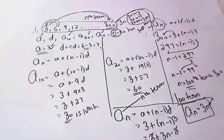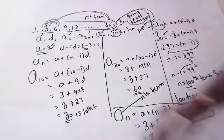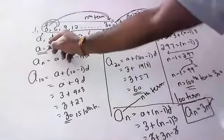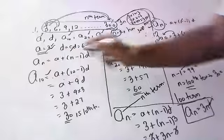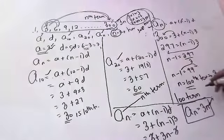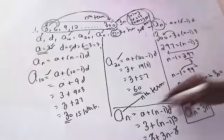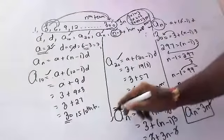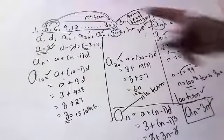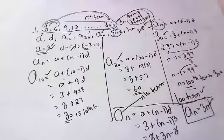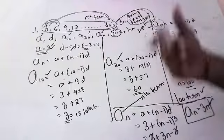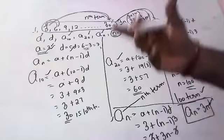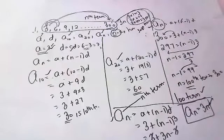So for all the sums, you have to find: a, d, the 10th term, the 20th term, the number of terms n, and the nth term formula. You should also find the middle term.